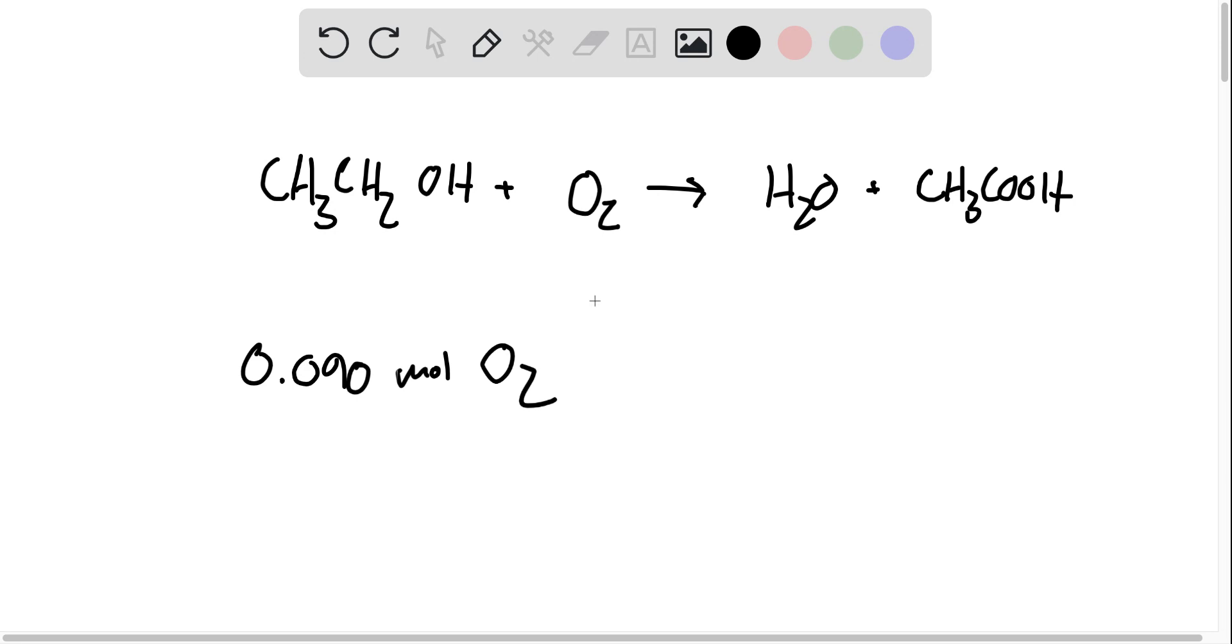Well, we need to figure out what the ratio of O2 to acetic acid is. And what that's basically saying is that we need to figure out what the stoichiometric coefficients are in front of oxygen and acetic acid after balancing the reaction.